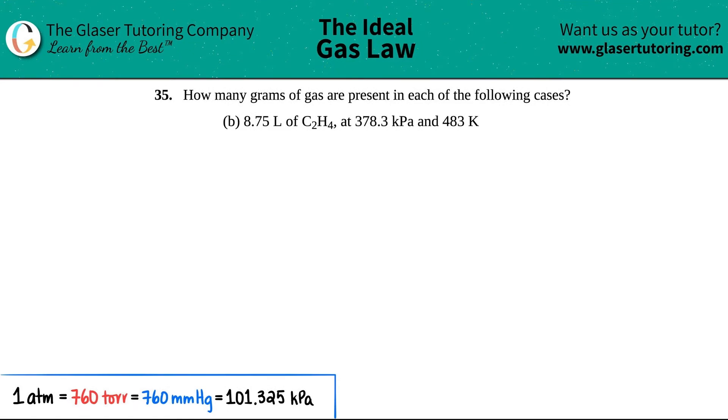Number 35: How many grams of the gas are present in each of the following cases? Letter B. In this case we have to find out how many grams of the gas are in 8.75 liters of C2H4, that's ethene, at 378.3 kilopascals at 483 kelvin.